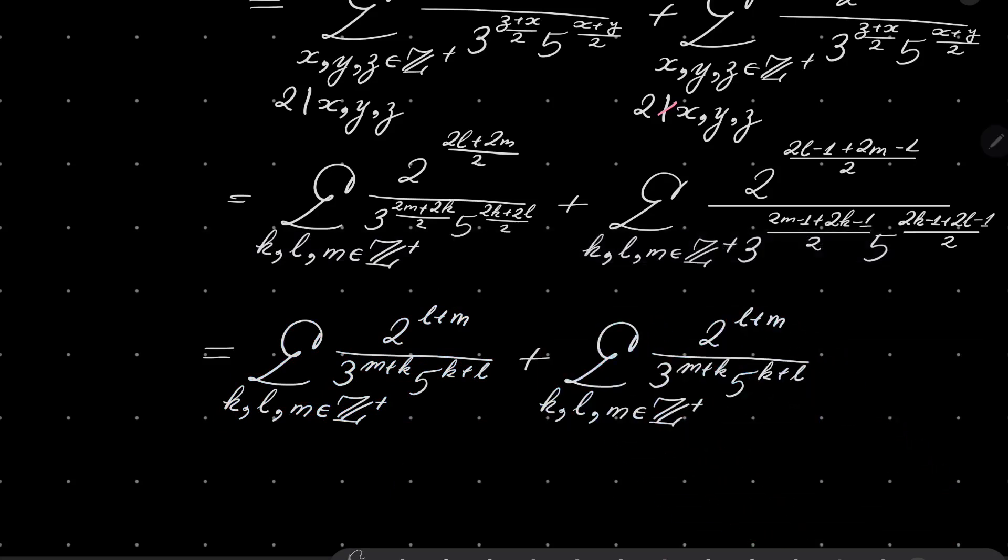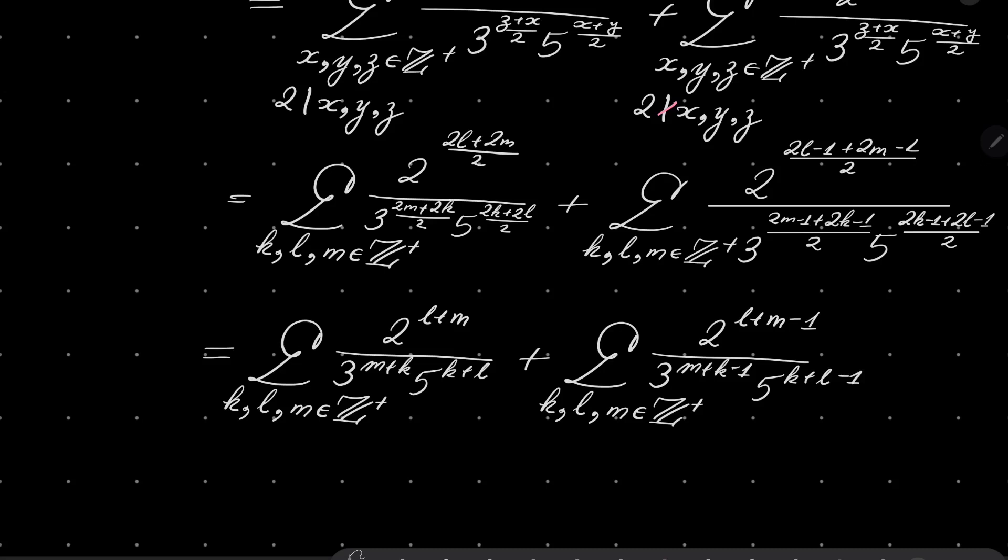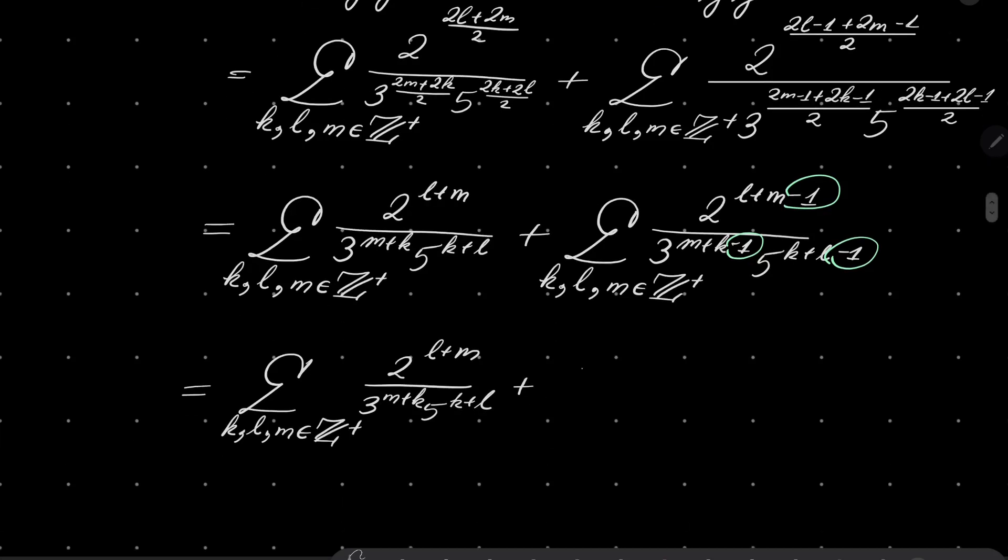Now notice that the second sum looks almost like the first sum but with few differences. I will simplify it. Because here we have 2 to the power of (l+m), 3 to the power of (m+k), 5 to the power of (k+l). And the second sum is almost the same but for few details. Namely, we have here -1, here we have -1, and here we have -1 as well. Alright, but it's not problematic because 2 to the power of -1, 3 to the power of -1, and 5 to the power of -1 can be taken outside of our sums.